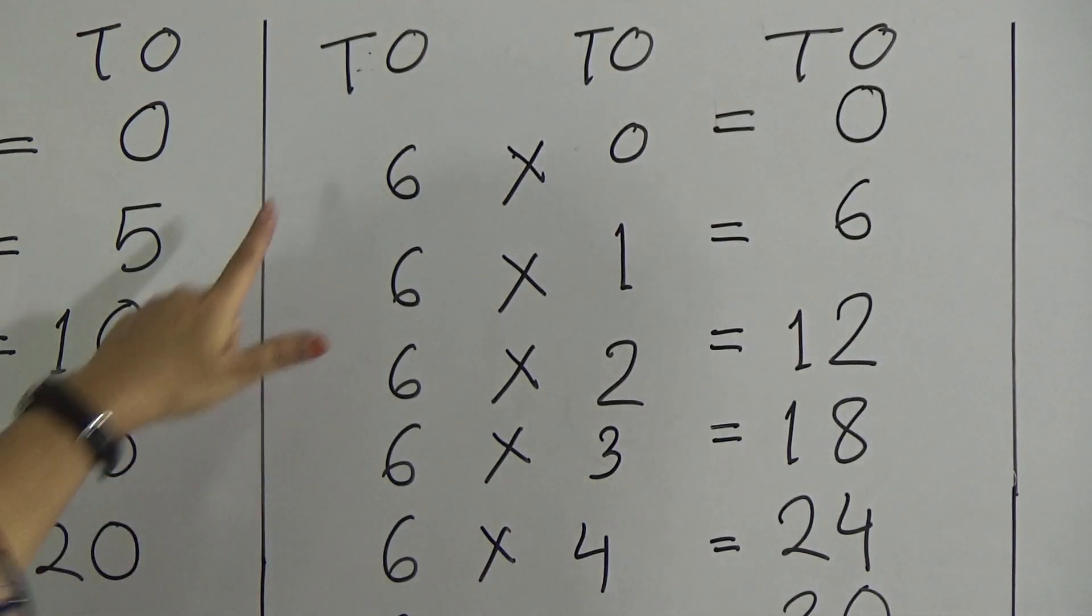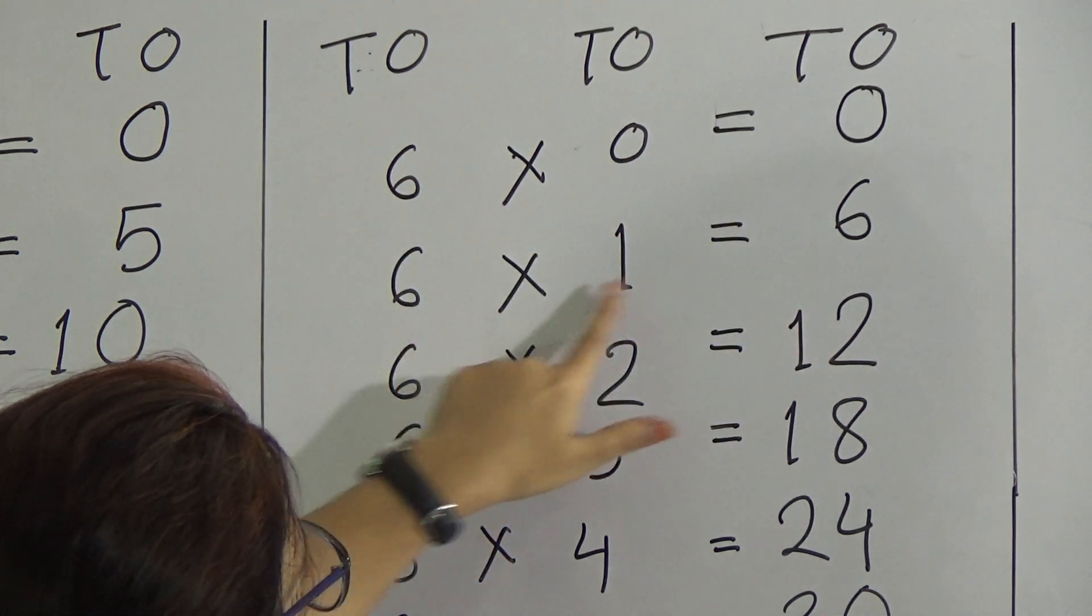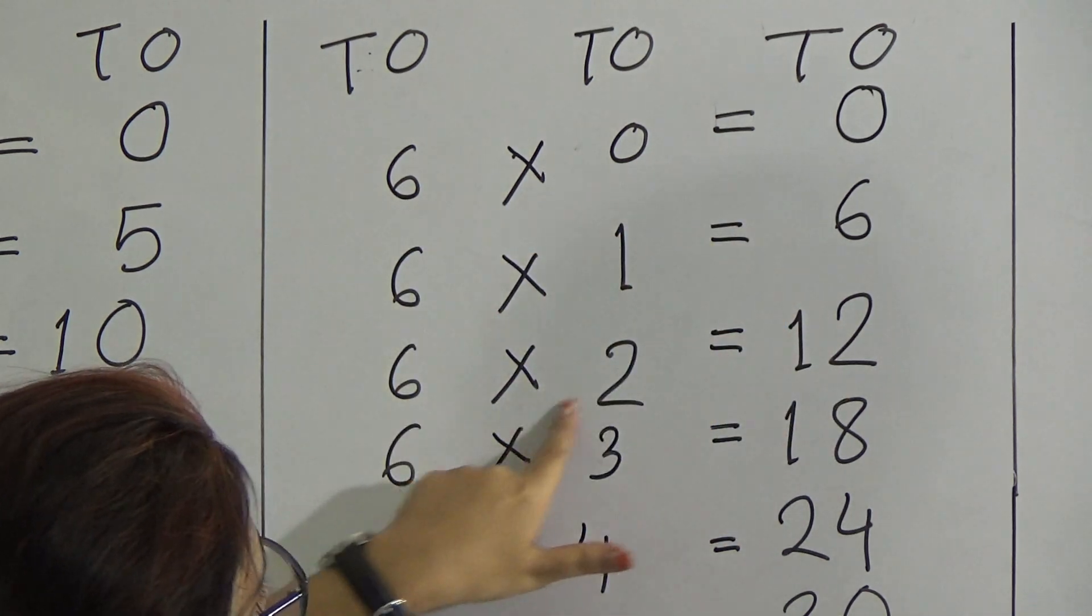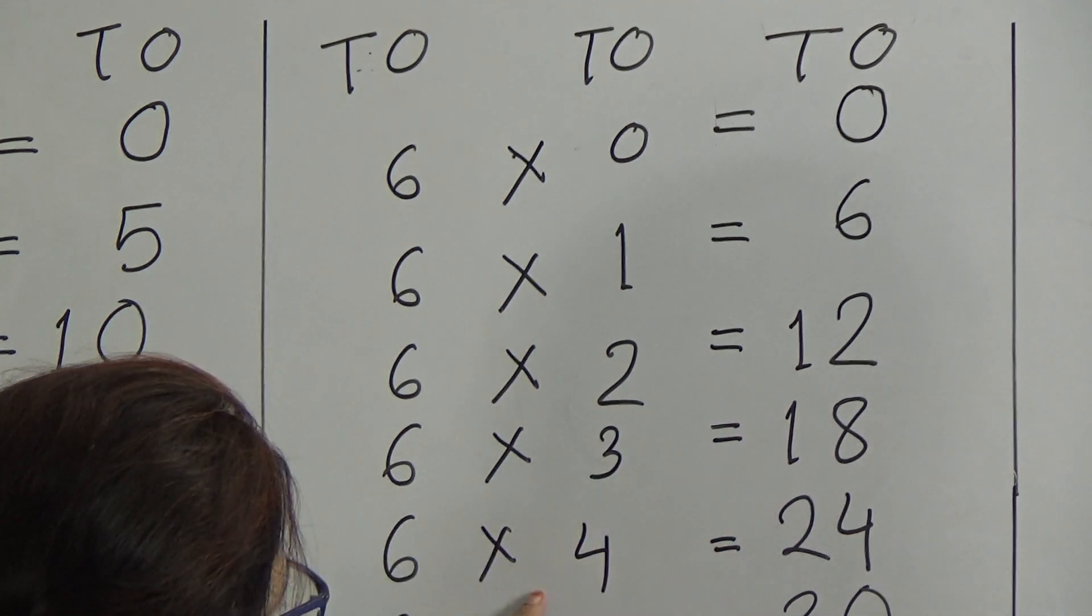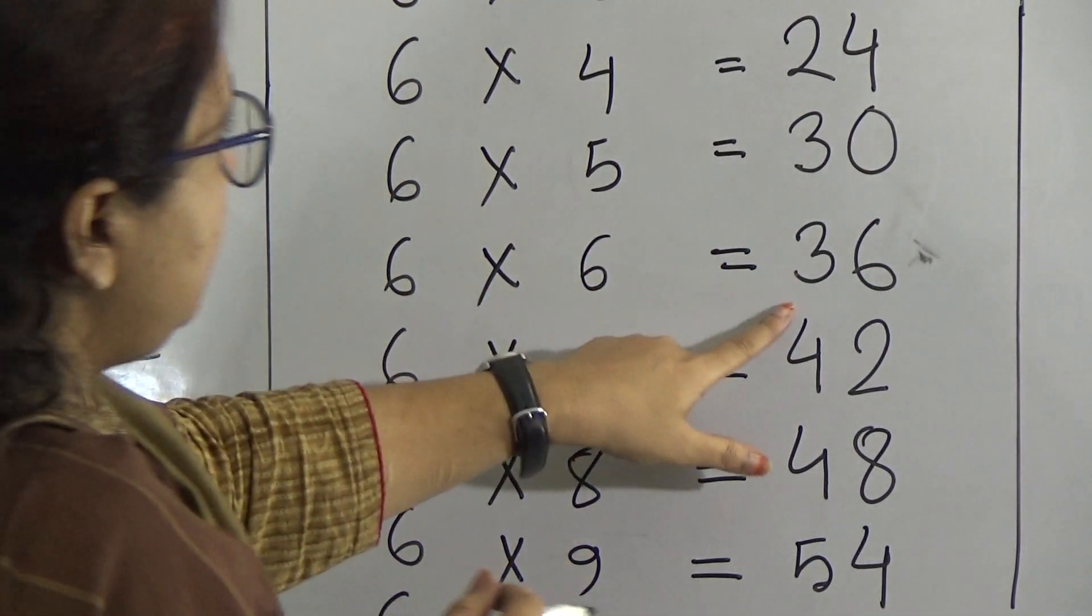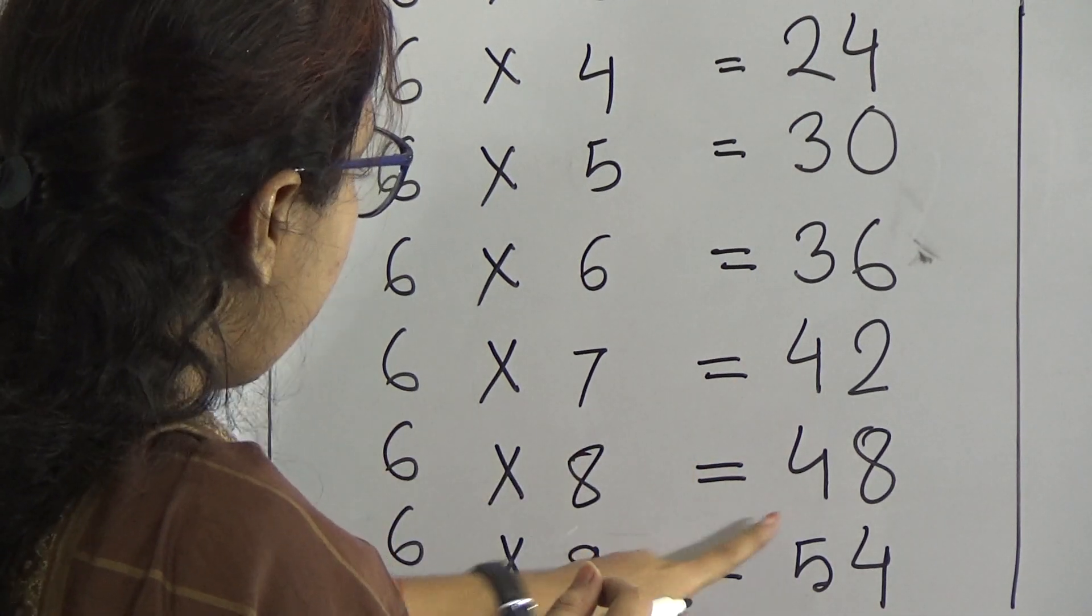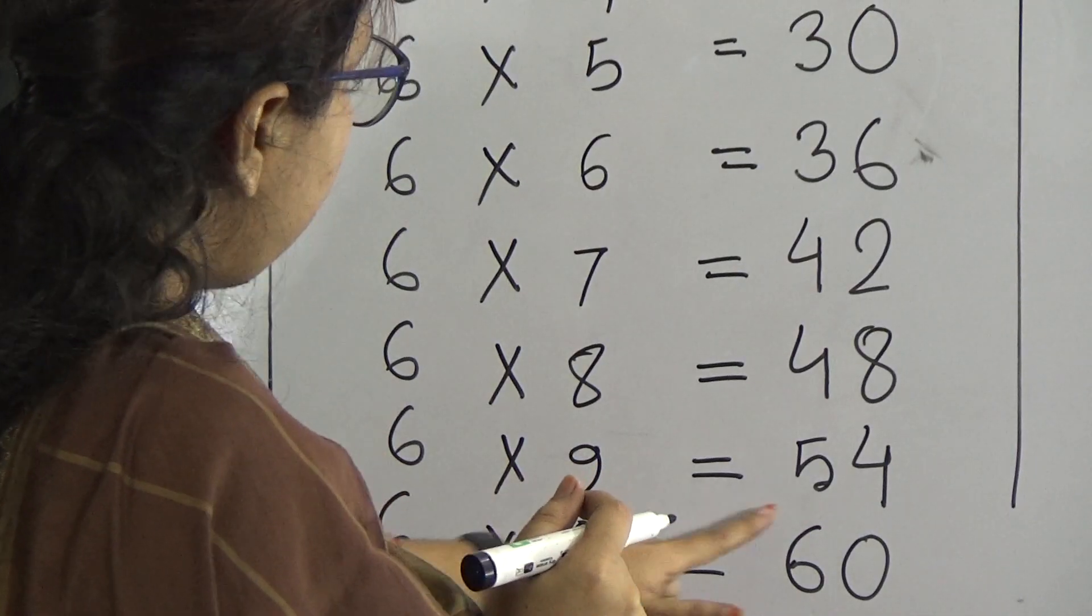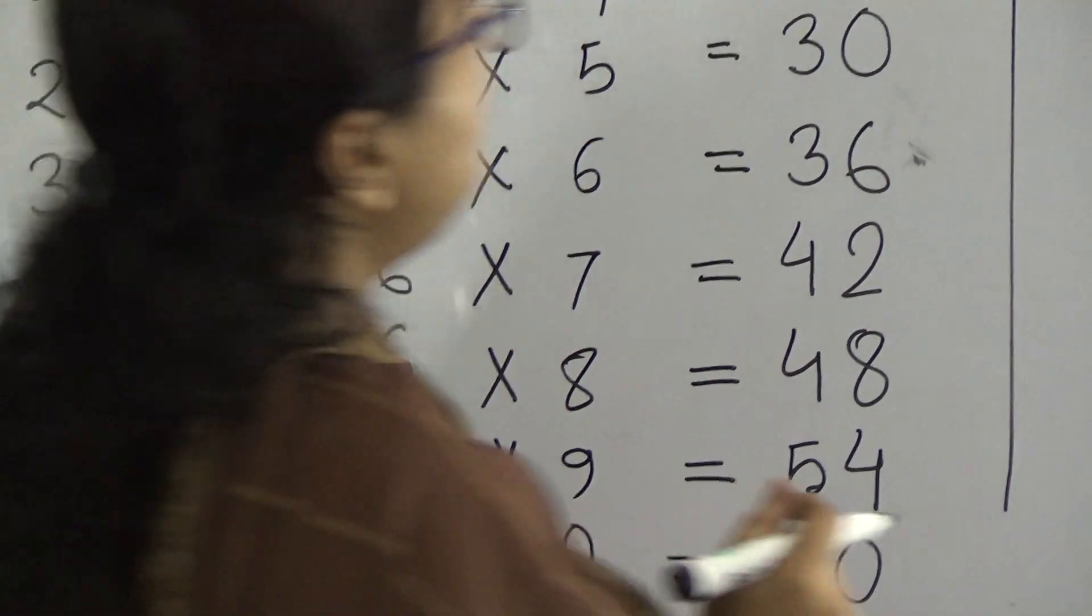Now dear students I repeat this times table again. 6 times 0 is 0, 6 times 1 is 6, 6 times 2 is 12, 6 times 3 is 18, 6 times 4 is 24, 6 times 5 is 30, 6 times 6 is 36, 6 times 7 is 42, 6 times 8 is 48, 6 times 9 is 54, and 6 times 10 is 60.